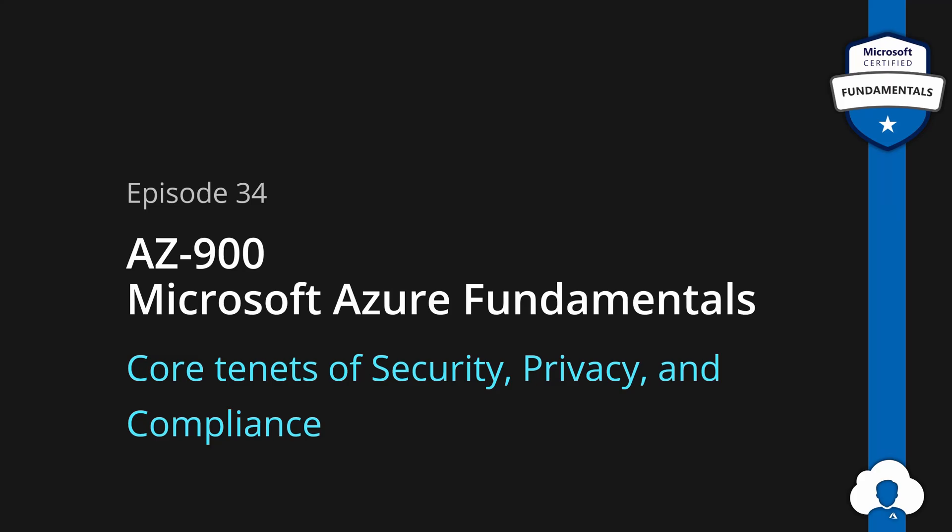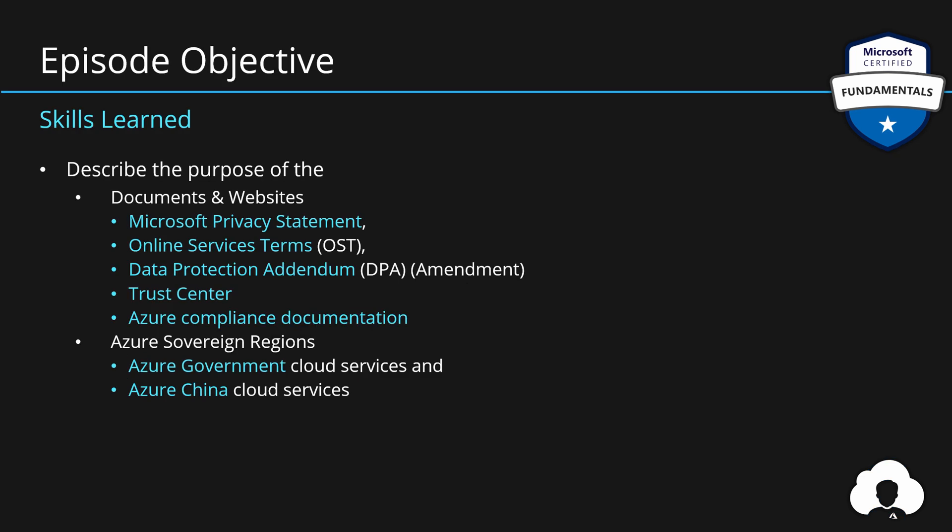Let's start this episode by reviewing what we're going to learn about today. After watching this video, you should be able to describe the purpose of the following documents and websites: Microsoft Privacy Statement, Online Services Terms, Data Protection Addendum, Trust Center, and Azure Compliance Documentation. Additionally, you need to be able to describe what Azure Sovereign Regions are and what they were created for, with the two main ones being Azure Government and Azure China.